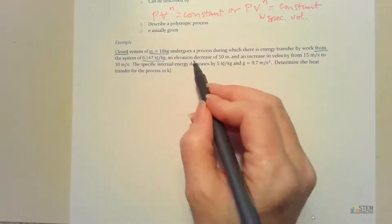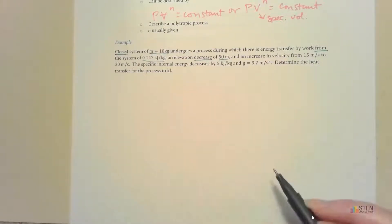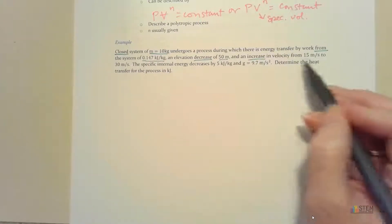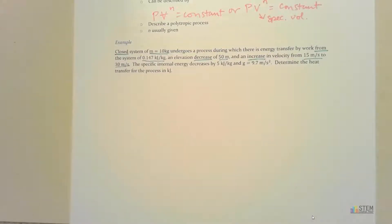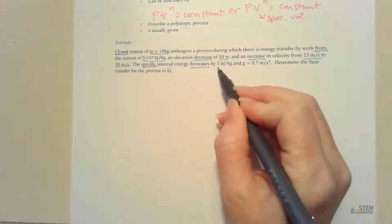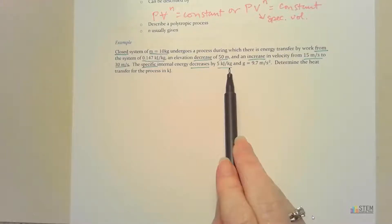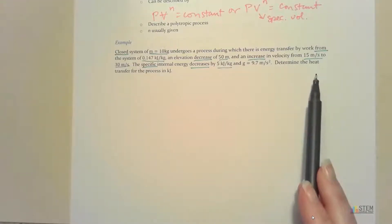We've got an elevation decrease of 50 meters — 'decrease' is important because it tells you about the sign. We've got an increase in velocity, so 'increase' also tells you about the sign. We've got specific internal energy decreasing by 5 kilojoules per kilogram — notice the units and the word 'specific.' And what we want to find is heat transfer, meaning we want to find Q.